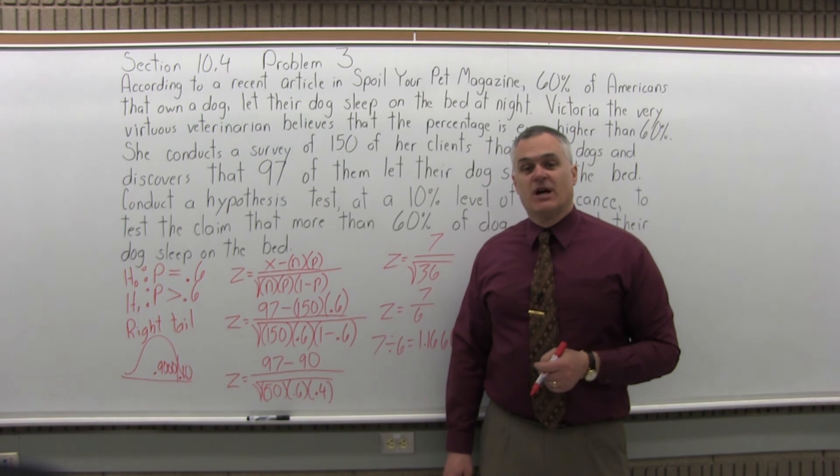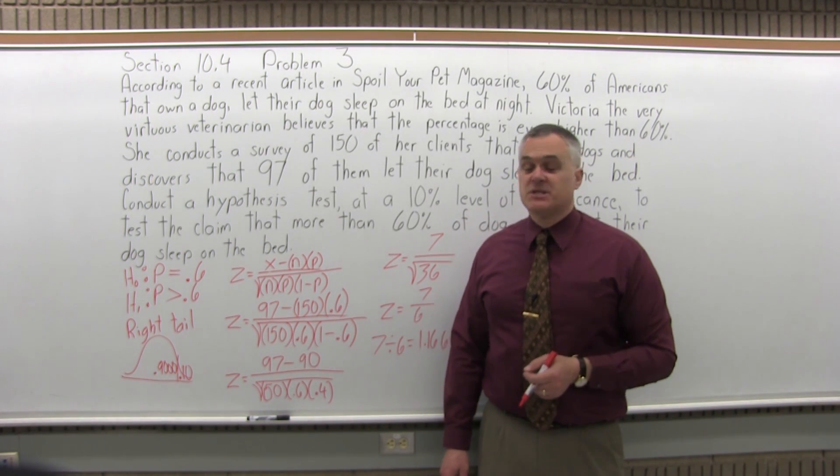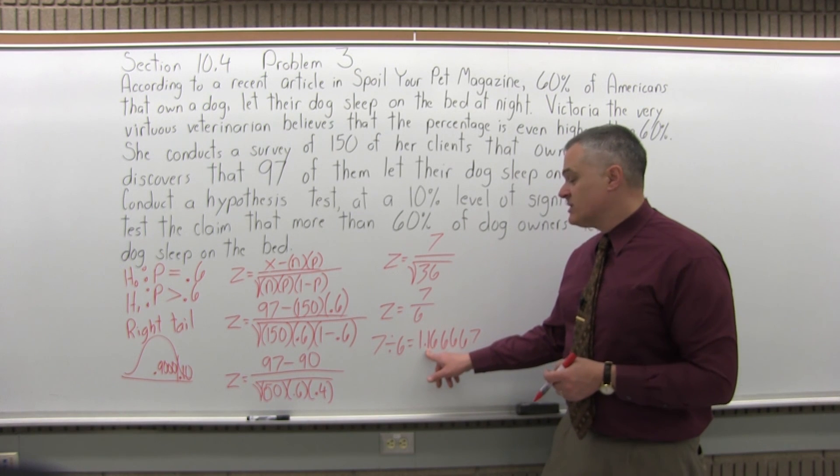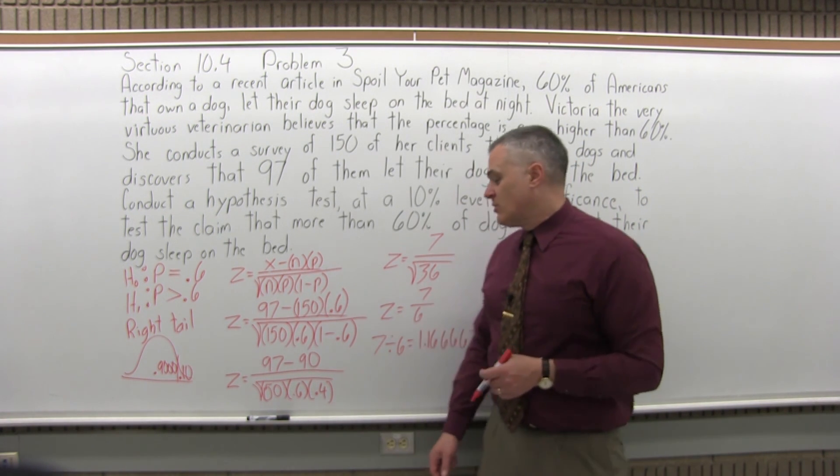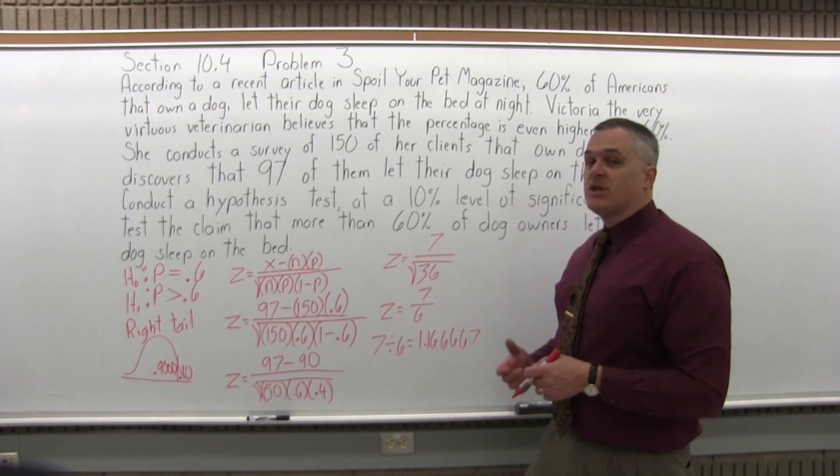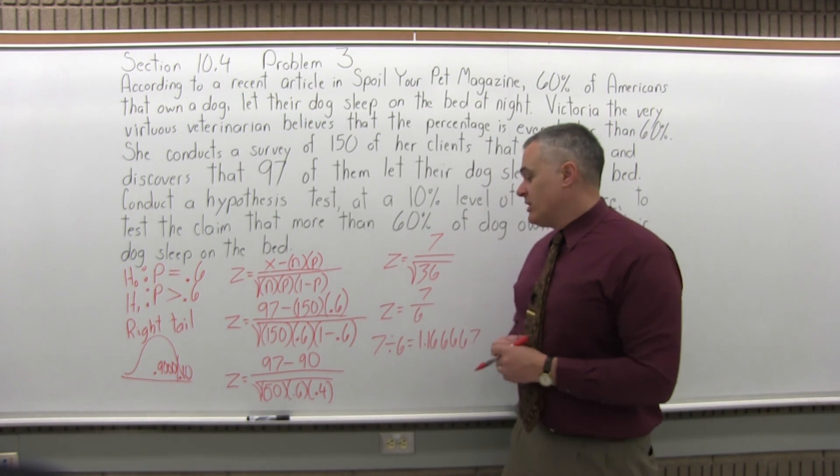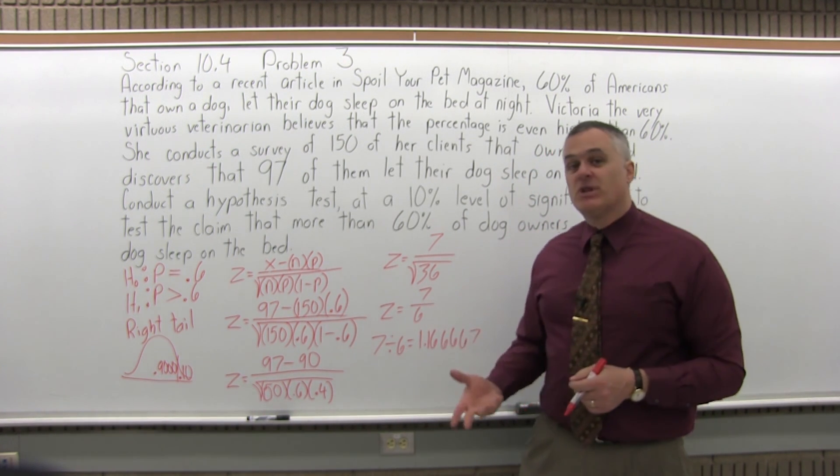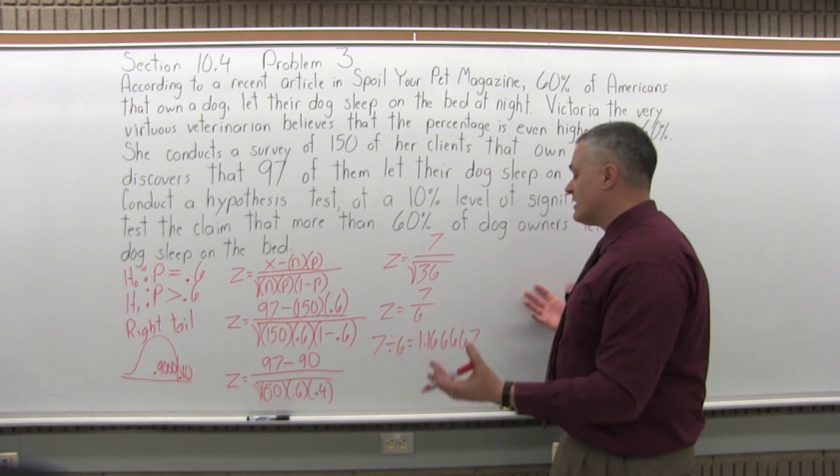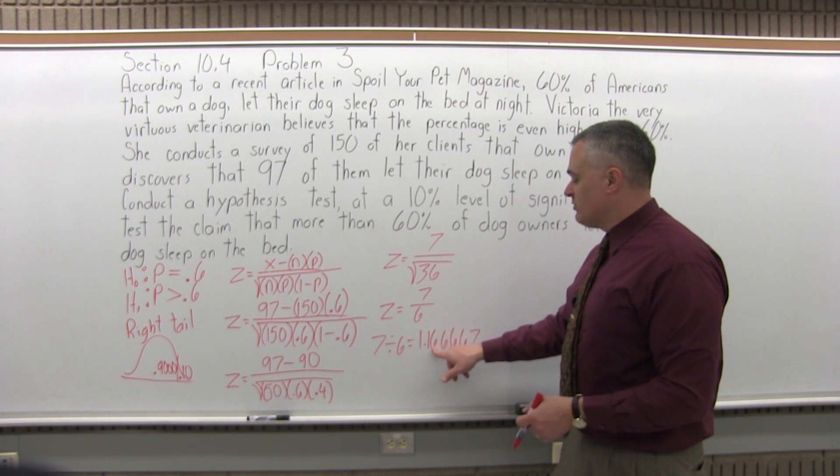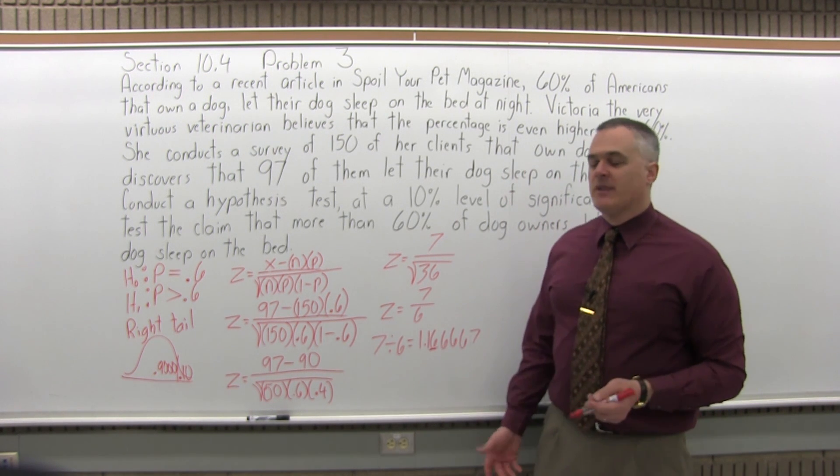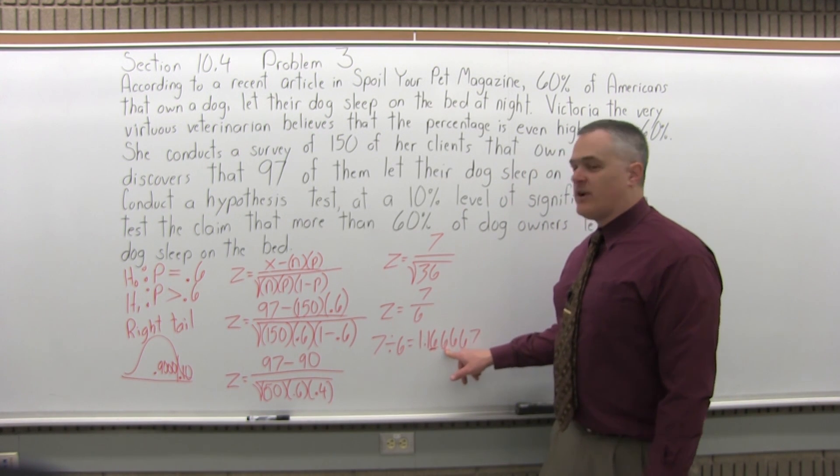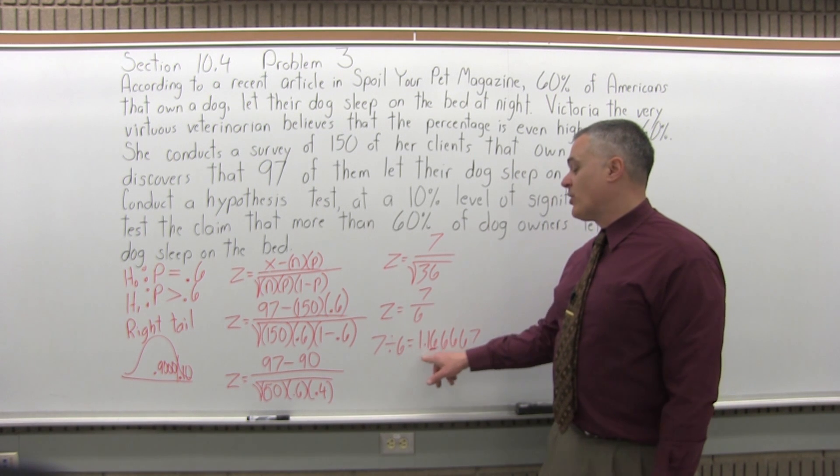The next step, step 5, is look up your result for z in the standard normal chart, attached at the end of the homework. To look something up in that chart, write it so that it has two places after the decimal. Here, we have an infinite number of places after the decimal, so two places out is the first 6 that shows up. We want to round that off. The next digit over is big enough to make it a 1.17.